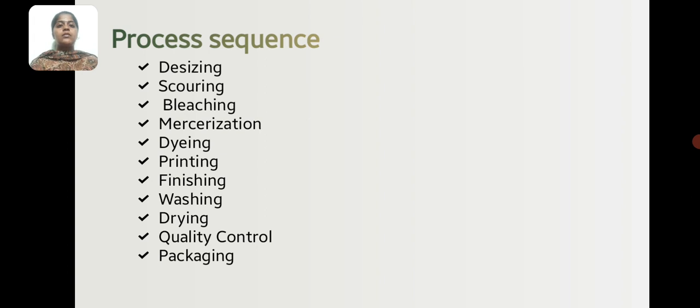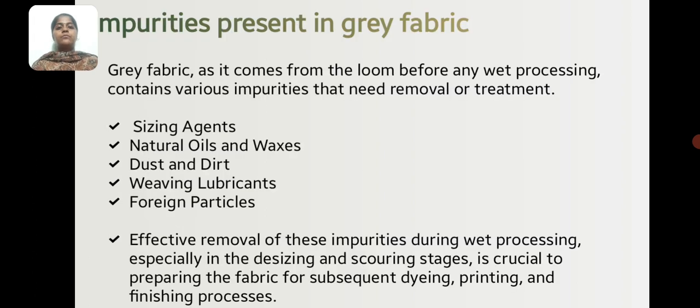The key steps in the process sequence include: desizing, scouring, bleaching, mercerization, dyeing, printing, finishing, washing, drying, quality control, and packaging.